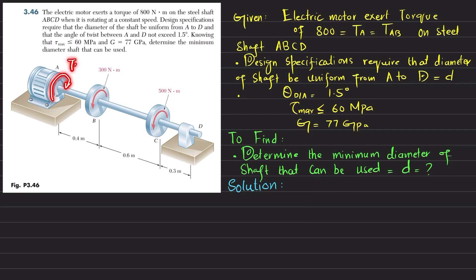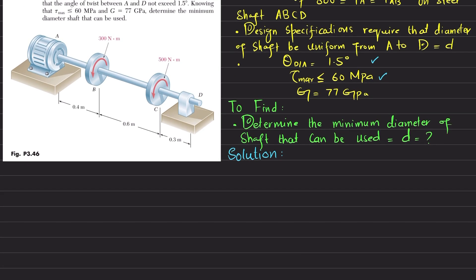Torque T_A is given as 800 N·m. At points B and C, additional torques are applied. We need to find the minimum diameter. Given the maximum shearing stress and the angle of twist of point D with respect to A, we will calculate the diameter based on both scenarios — first finding the torques.